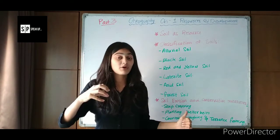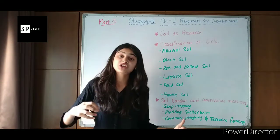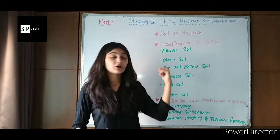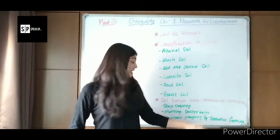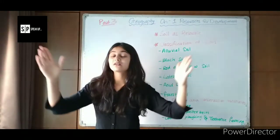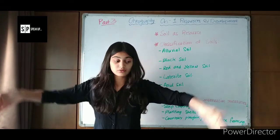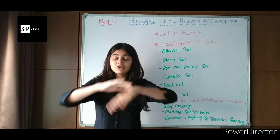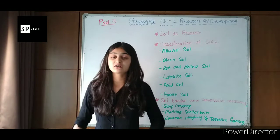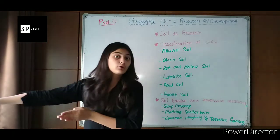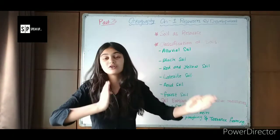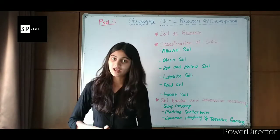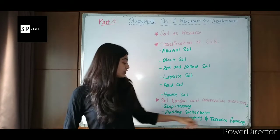Another method is planting shelter belts. For a detailed explanation of shelter belts, you can check out Part 2 of this chapter. Shelter belts are boundary lines of planted trees constructed so that water won't flow away, the soil won't erode, and soil erosion won't happen.